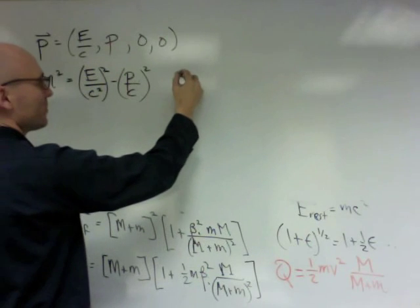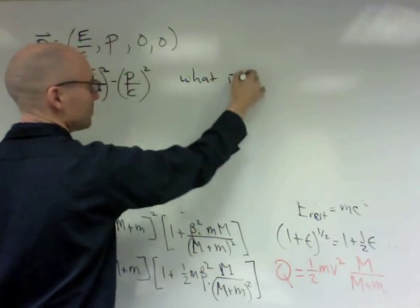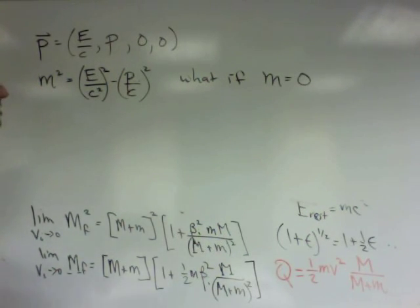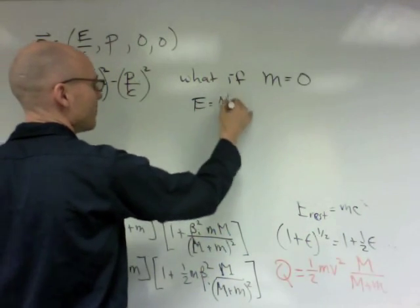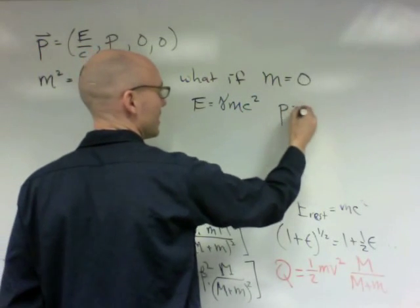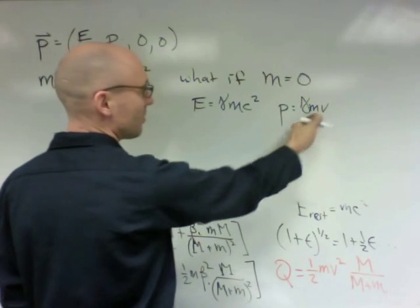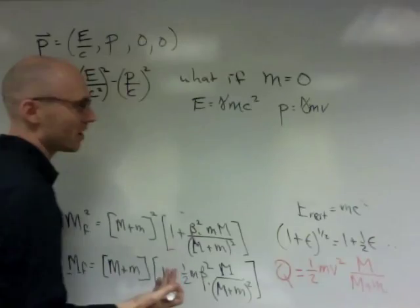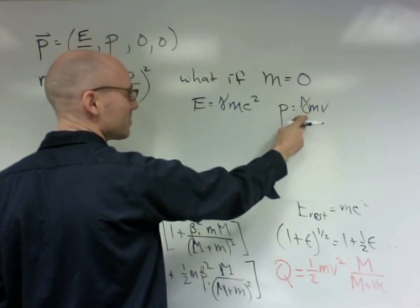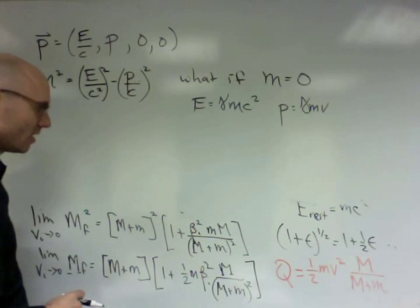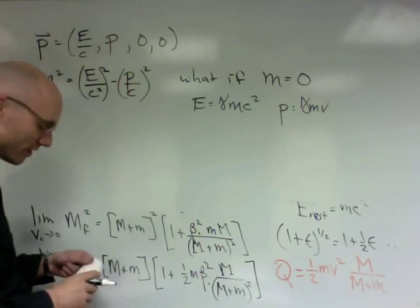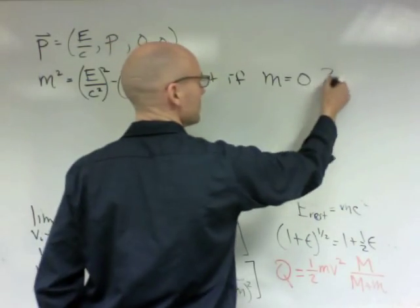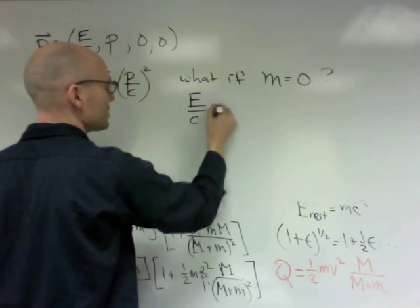Now, what if we set the mass equal to zero? Now, setting the mass equal to zero is really strange because we think that E is gamma mc squared and P is gamma mv. So if the mass is zero, surely the momentum would be zero, and if the mass is zero, surely the energy would be zero, and that argument seems reasonable, except that the mass could go to zero as gamma goes to infinity, and that would solve our problems. But let's ignore this fact for a minute and let's just ask, what would happen if mass equals zero? Well, if mass equals zero, this would imply that E over C equals P, that the momentum and the energy are equal in dimensionless units.